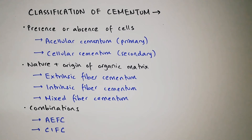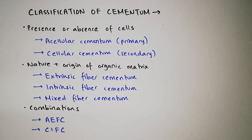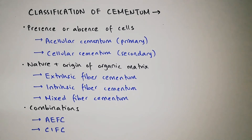Cementum is classified on the basis of presence or absence of cells, or on the basis of nature and origin of organic matrix. Based on presence or absence of cells, cementum is either acellular or cellular. Based on the nature and origin of organic matrix, cementum is either extrinsic fiber cementum, intrinsic fiber cementum, or mixed fiber cementum.